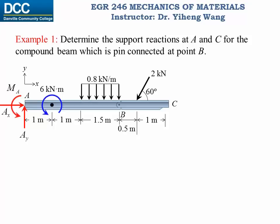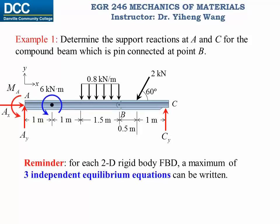At point C, because we have a roller support, there is only one vertical force reaction. Before writing equilibrium equations, we recall that for each two-dimensional rigid body free body diagram, we can only write a maximum of three independent equilibrium equations. But we have four unknowns here, therefore we do not have enough equations to solve for all of them.